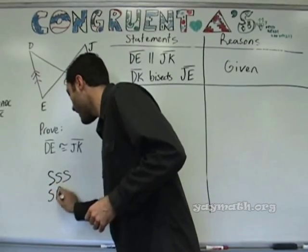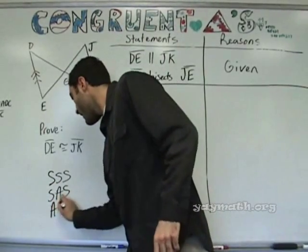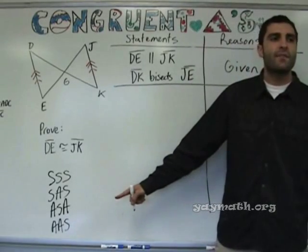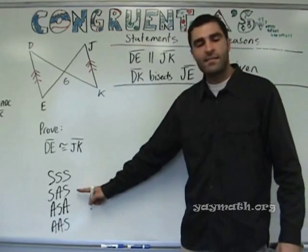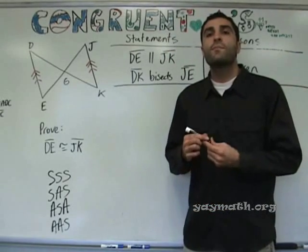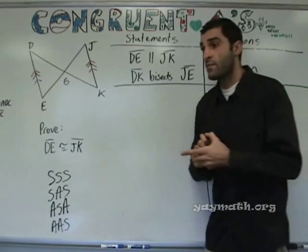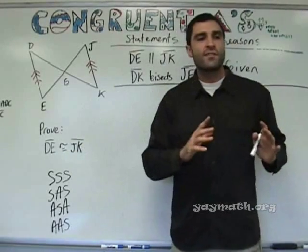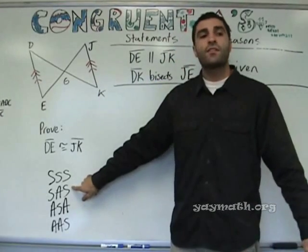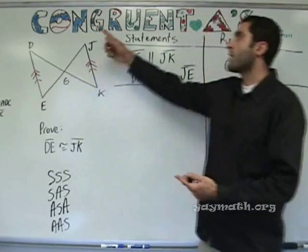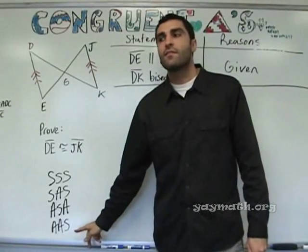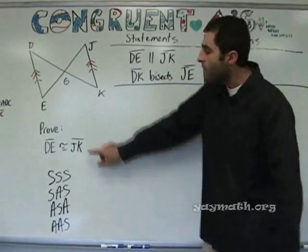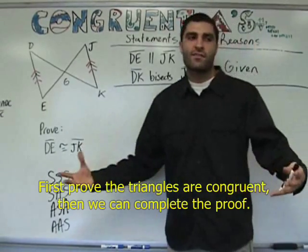We have SSS, SAS — two more: ASA and AAS. Can someone explain what these mean, what's the idea behind them? The sides and angles — where they're shown to be congruent on the triangle. Basically, for SAS for example: two triangles each have two congruent sides and they share one congruent angle between them, then the two triangles are congruent. So these four postulates are the four ways of proving triangles congruent.